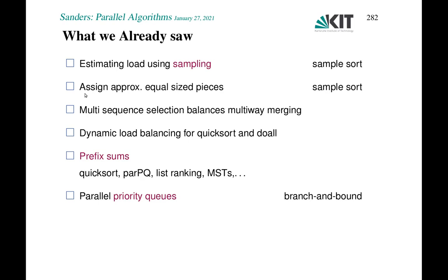We used sampling in such a way that we then assigned approximately equal-sized pieces. Similarly, in the multi-way merge sort algorithm, we used the multi-sequence selection algorithm to split the problem of multi-way merging into several equal-sized sub-problems. In quicksort, we used dynamic load balancing. A technique we saw several times are prefix sums to assign work to processors — in quicksort, parallel priority queues, list ranking, and minimum spanning trees. We also saw a generic scheduling technique using parallel priority queues for branch and bound.